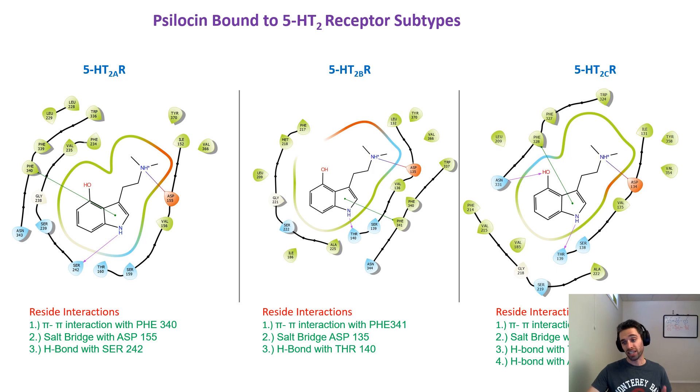In 2B, it occurs at threonine, and in 2C, it also occurs at threonine. So that changing in that amino acid residue does slightly change the binding conformation, but overall it's a very similar conformation between the three subtypes of receptors.